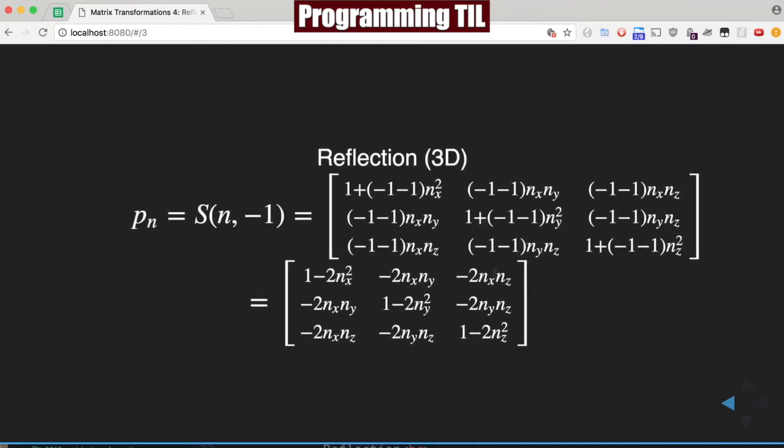If we want to go 3D, we do the exact same thing with the equation from the previous episode, replacing all the k's with negative 1 here and ultimately solving for this matrix right here.